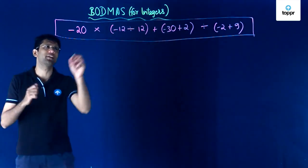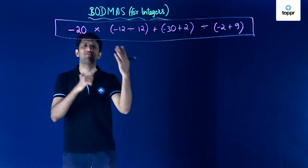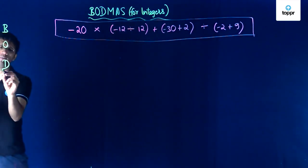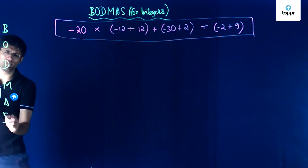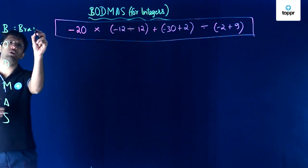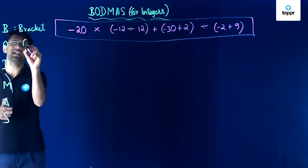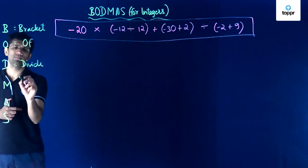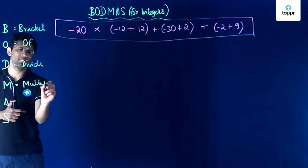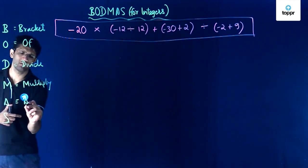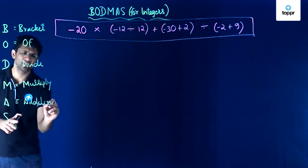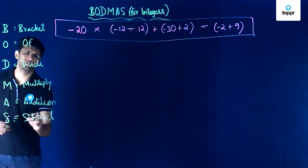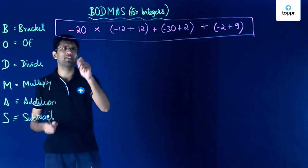The BODMAS method tells us which operator to perform first and which to perform after that. Writing out BODMAS in full: B stands for Bracket, O stands for Of, D stands for Division, M stands for Multiplication, A stands for Addition, and S stands for Subtraction. This is the full form of BODMAS and we are now going to apply this order to the given expression.